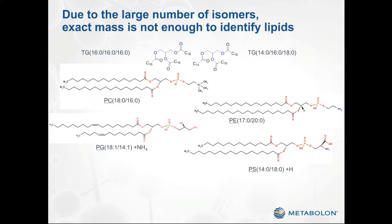The large number of possible lipid structures leads to a basic problem in lipidomics, which is that many lipids share the same chemical formula and therefore have identical exact masses. This means that they cannot be distinguished by a single mass spectrometric measurement. This issue can affect lipids both within a single lipid class, as well as lipids across different lipid classes, and therefore very different functions potentially, as shown by these three examples.